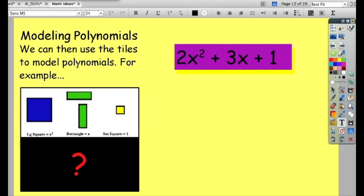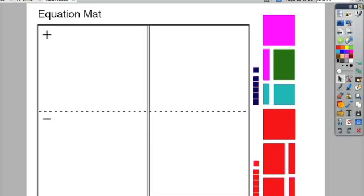You can also use drag a copy to create virtual manipulatives like algebra tiles. Here's another flip chart page I downloaded from Promethean Planet that uses drag a copy to create virtual algebra tiles. So each of these you can see when you click over it is going to have the hand, and this is going to make another copy of this.